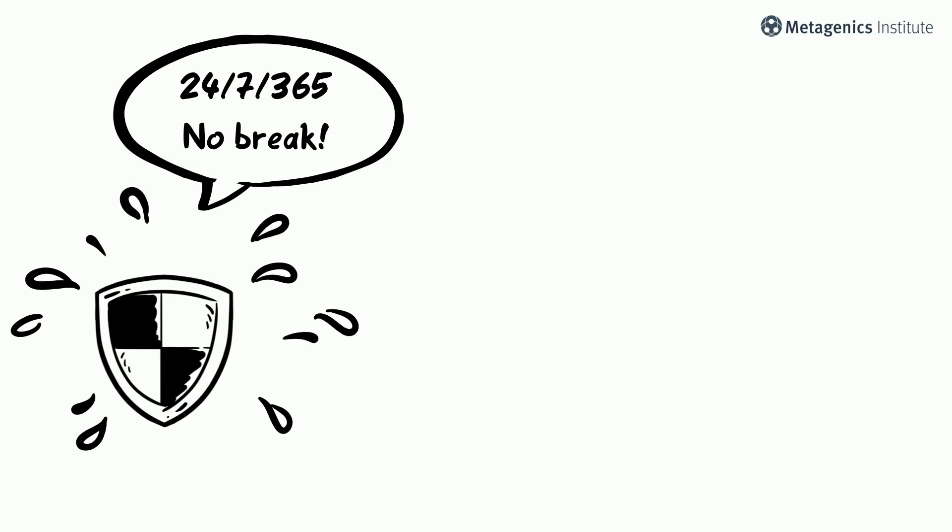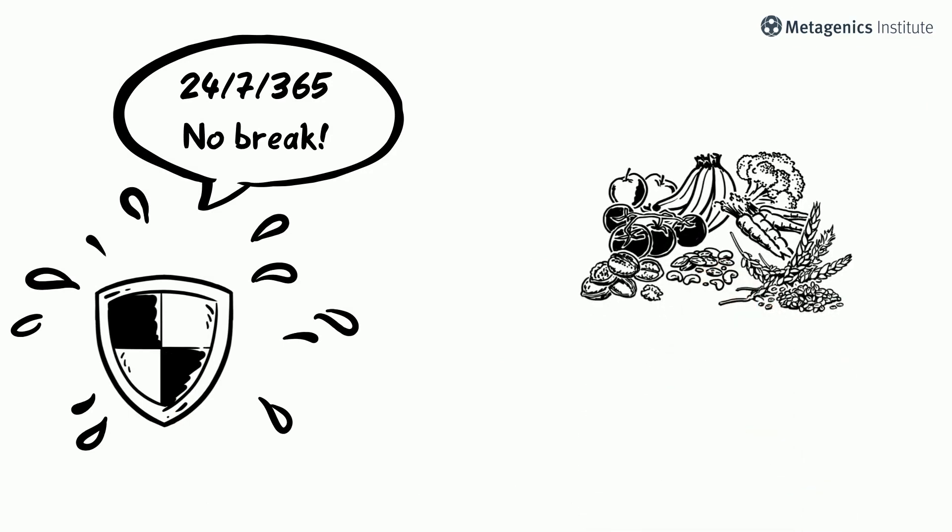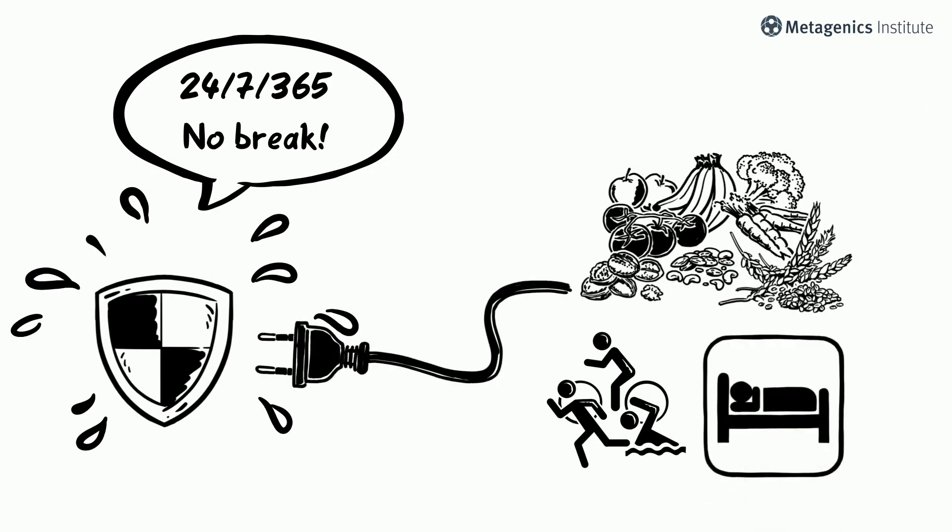example, the immune system is always working and therefore requires a balanced supply of energy and nutrients, regular exercise, and adequate sleep in order to function properly.